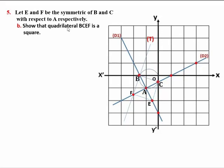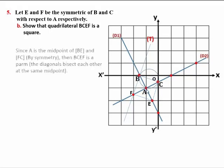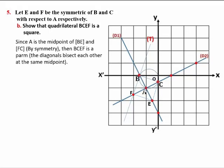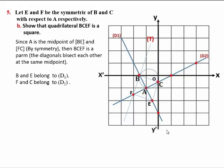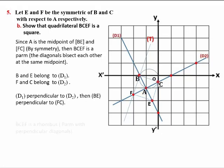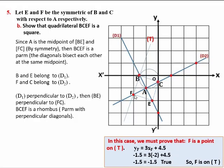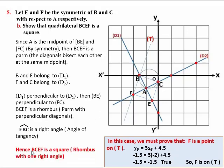Part 5b: show that quadrilateral BCEF is a square. Since A is the midpoint of BE and FC by symmetry, BCEF is a parallelogram. B and E are two points on D1, and since D1 and D2 are perpendicular, BE and FC are perpendicular, so BCEF is a rhombus with perpendicular diagonals. Since angle FBC equals 90 degrees (the right angle from the tangent), BCEF is a square — a rhombus with one right angle.